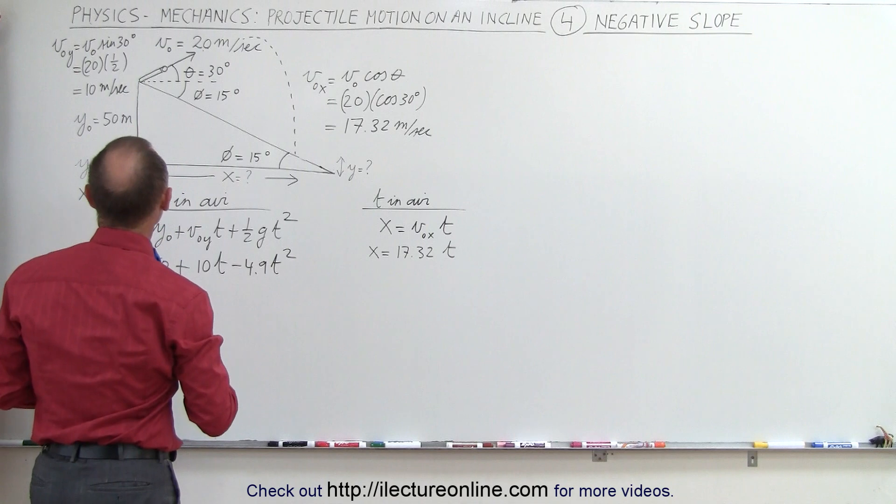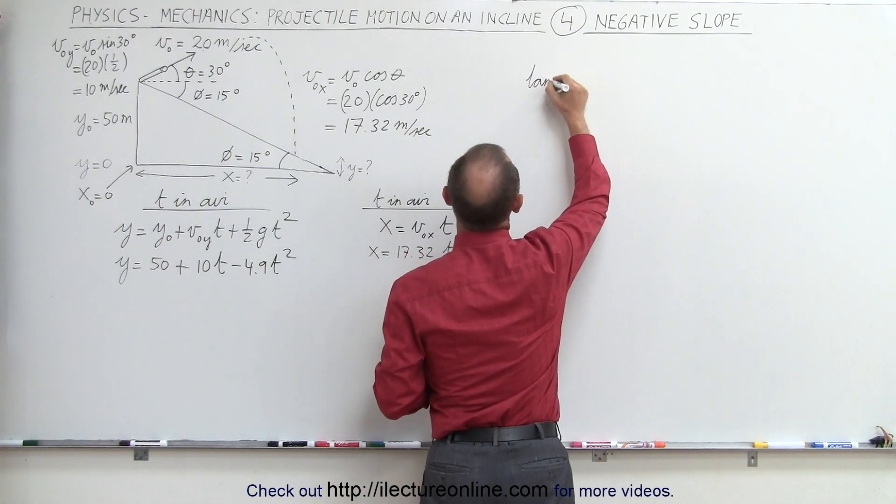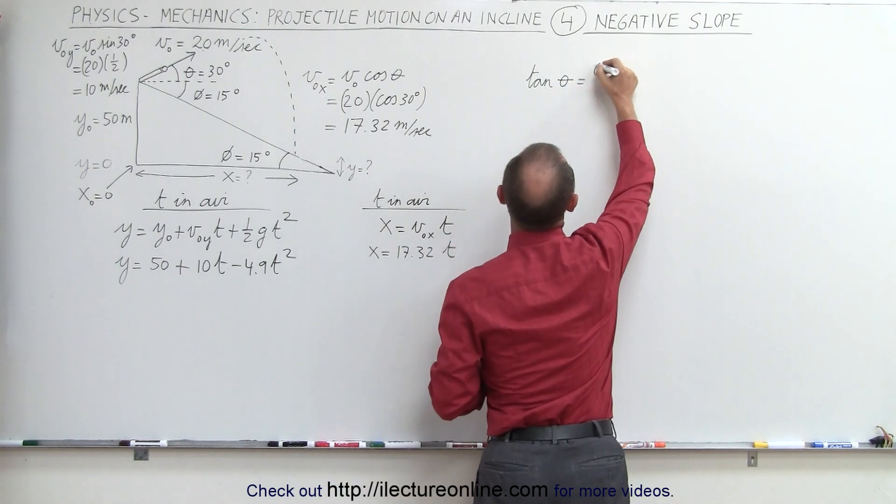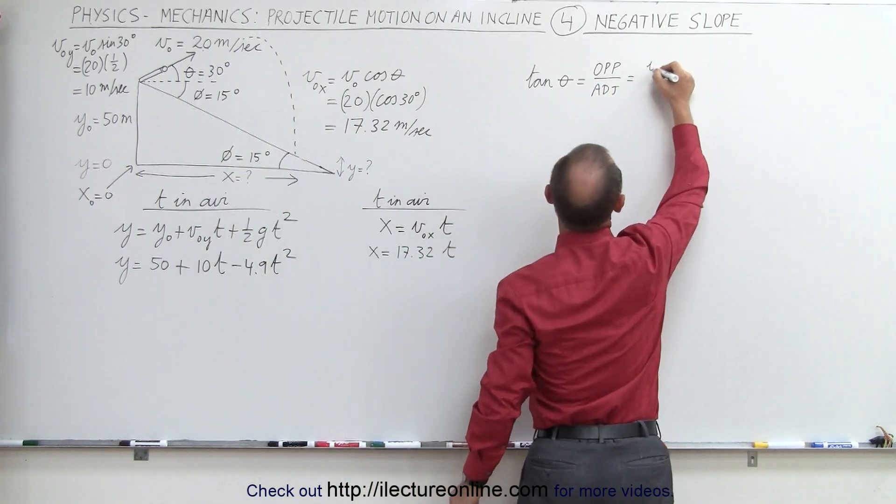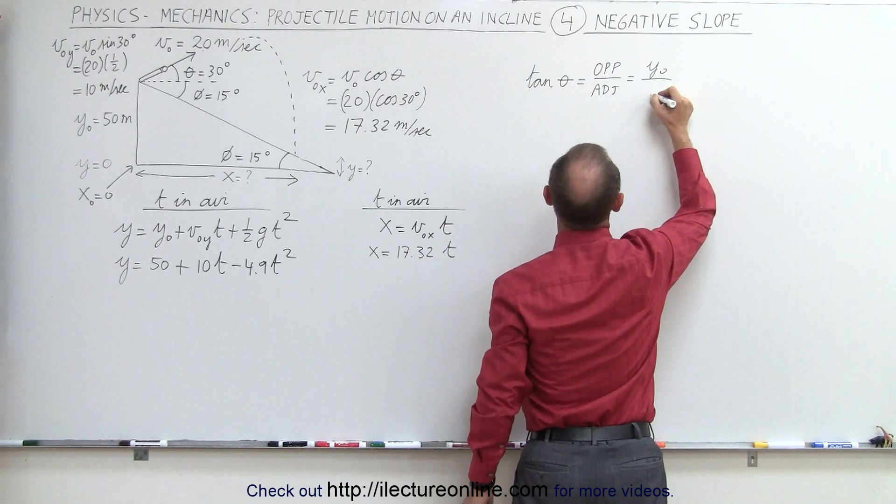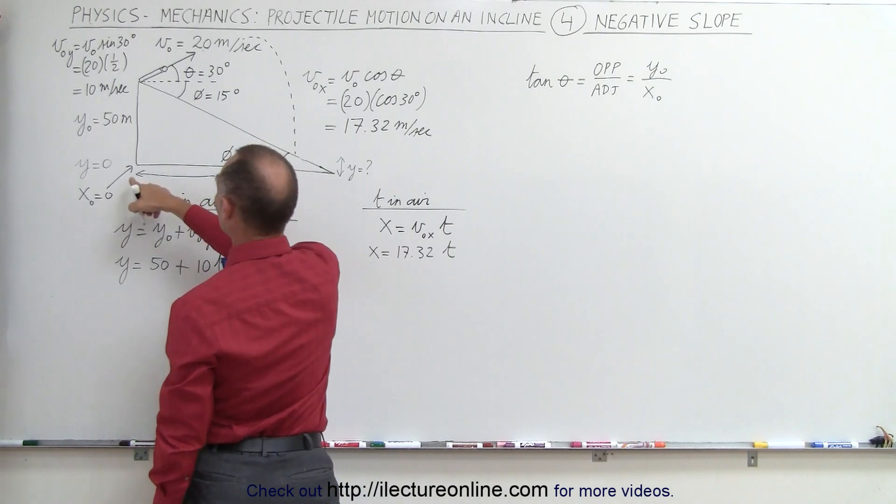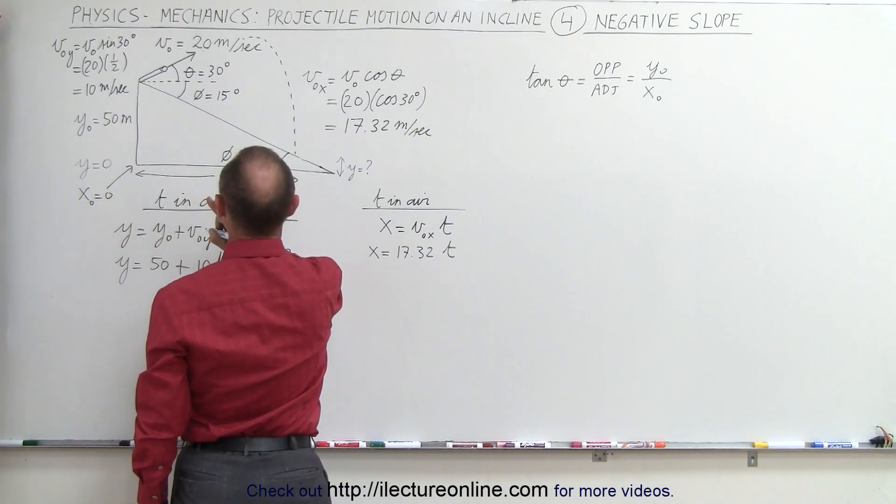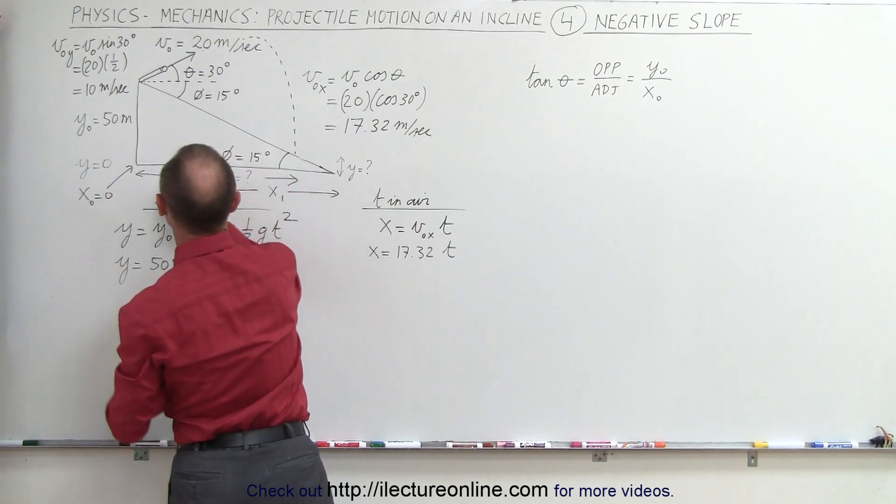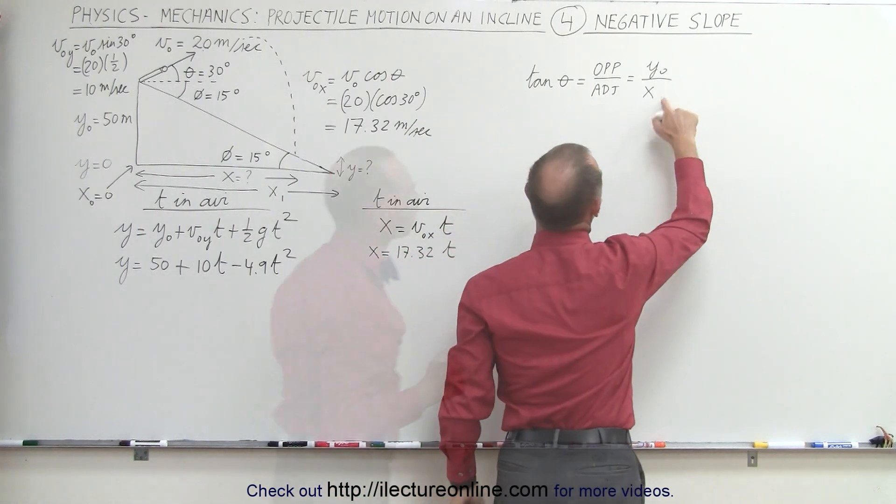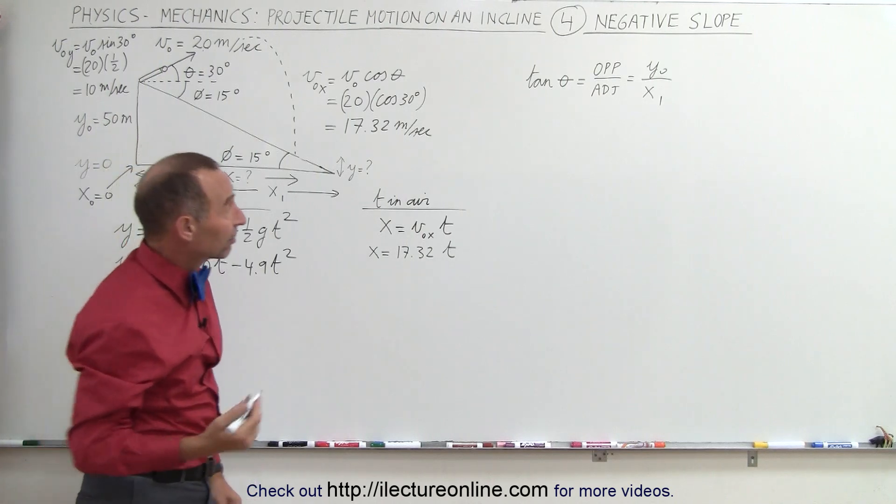What we can say here is, let's use the tangent of theta. So we can say that the tangent of theta is equal to the opposite side divided by the adjacent side, which in this case, the opposite side would be y sub not. The adjacent side would be x sub not. That would be the full distance. Well, let's see here. We can't call it x sub not because I called x sub not this. So let's call this x sub 1. All right. So that would be the full length of the incline. Let's call it x sub 1. Now we know what y sub not is. We know the angle that allows us to find x sub 1.